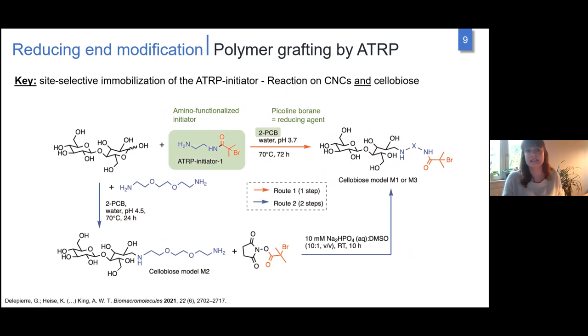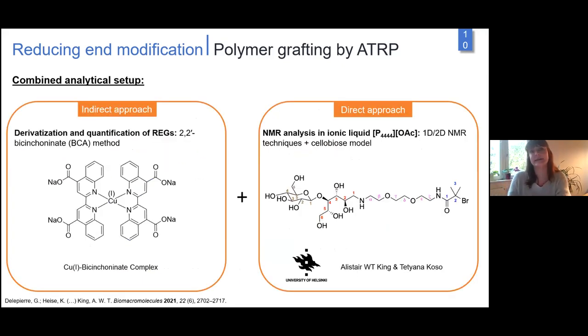We used two different routes. The first was direct reductive amination using an amino functionalized initiator synthesized in our labs. It's a water-based reaction, acid catalyzed, using picolinoborane as reducing agent because it's very selective. The second pathway was also reductive amination to attach EDA, followed by attaching an NHS activated initiator, but this two-step pathway was more problematic.